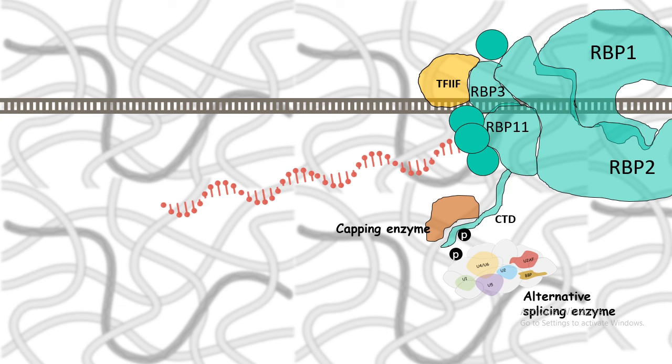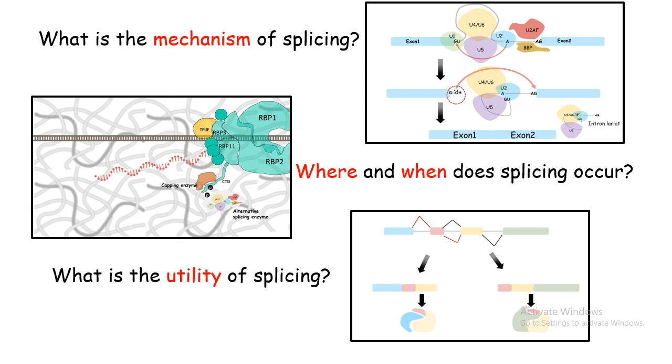Overall in this video we looked at the mechanism of splicing, where does splicing occur, and the utility of alternative splicing. I hope you understand this concept. This was just an overview of this whole process. In subsequent videos we are going to talk about all of these processes in much more detail. Thanks for showing love and don't forget to like, share, and subscribe. Thank you.